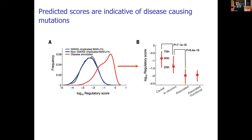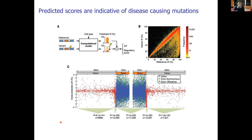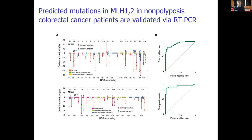The regulatory score is the delta between the impact of the reference versus the alternate allele on splicing. You can look at intronic versus exonic variation and examine specific examples, applying this not just to common variants but also to rare variants. For colorectal cancer patients, somatic variants detected via RT-PCR show that a large number appear to have effects on splicing.